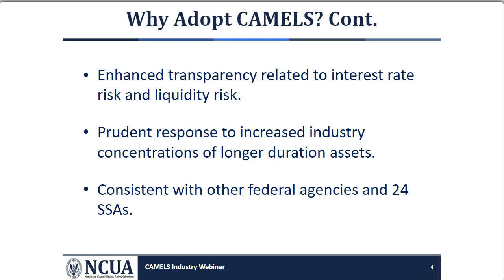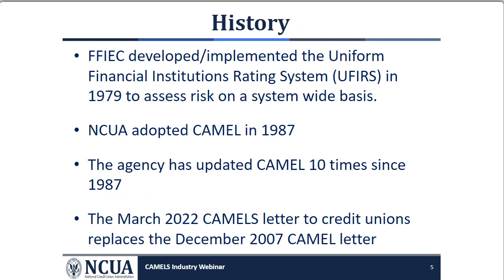Separating the S and L rating components will provide more transparency to credit unions about their interest rate risk and liquidity risk profiles. The growing complexity of the credit union industry and the increased concentration in long-duration assets is another reason to separate the S and L components. In 1997, mortgage-related assets represented only 19% of credit unions' total assets; as of September 2021, they represented approximately 45%. Adopting CAMELS also aligns NCUA with other federal agencies and approximately 24 state supervisory authorities that already use the S component.